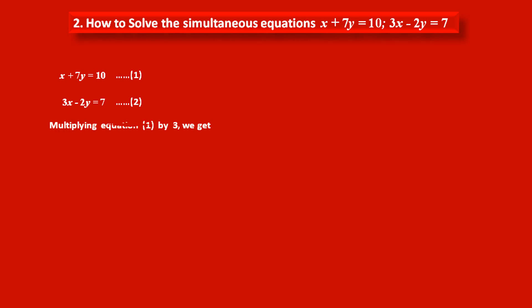So, multiplying equation 1 by 3, we get 3x plus 21y equals 30. Consider this as statement number 3. Now, instead of given equation 1, we have to use equation number 3 and equation 2 to find the variables x and y.